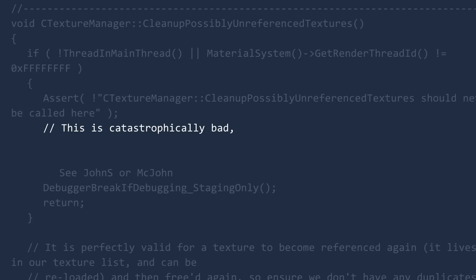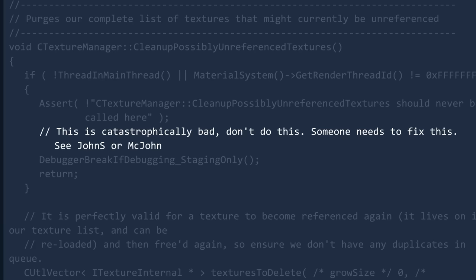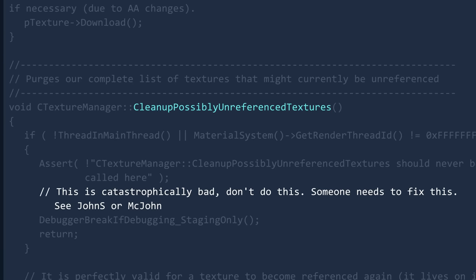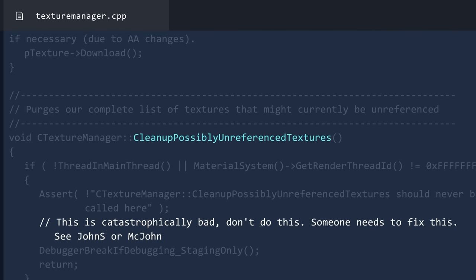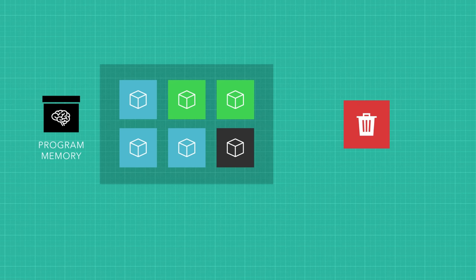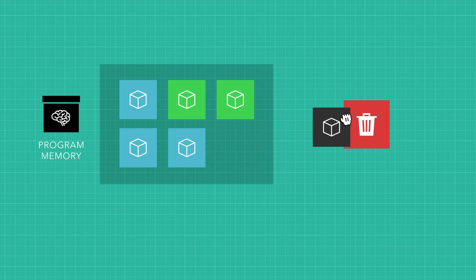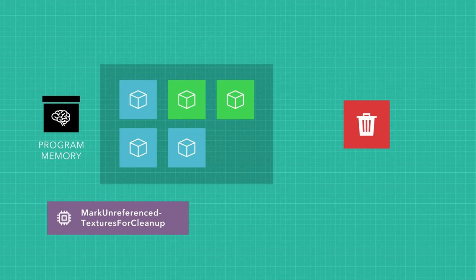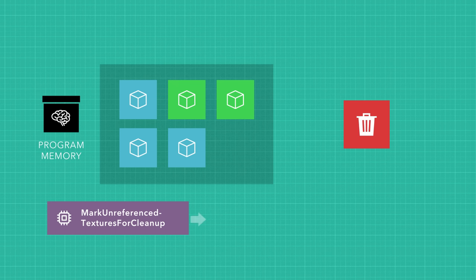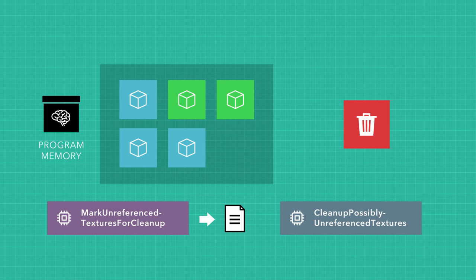"This is catastrophically bad." This is commented in the Cleanup Possibly Unreferenced Textures function in the code for the Texture Manager. In order to minimize the memory usage of our program, we need to unload things when we're done using them. Another function called Mark Unreferenced Textures for Cleanup periodically checks for any textures that are no longer in use and sends them into a list, which the function Cleanup Possibly Unreferenced Textures reads through and frees all the textures from memory.